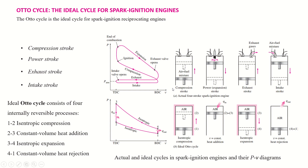The first stroke is called the compression stroke. In the compression stroke, the air-fuel mixture is compressed due to the upward movement of the piston. It continues until the piston reaches its top dead center, during which the volume decreases and the air-fuel mixture is compressed to a high pressure.